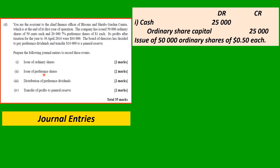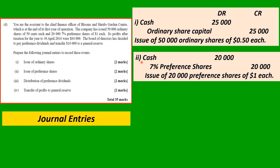For the issue of preference shares: debit Cash $20,000 (20,000 × $1), credit 7% Preference Share Capital $20,000. Narrative: issue of 20,000 preference shares of $1 each.